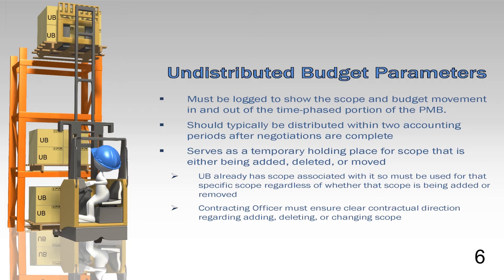Previously, we showed an example of budget and scope being added to UB and then distributed to control accounts and MR. Sometimes, previously distributed scope, budget, and schedule is awaiting a contract modification for deletion. Until a contractual change is issued, the scope and budget are moved from the control account to UB. It cannot be used for other purposes without contractual direction. The contractor must have clear direction from the contracting officer to support the basis for UB transactions.